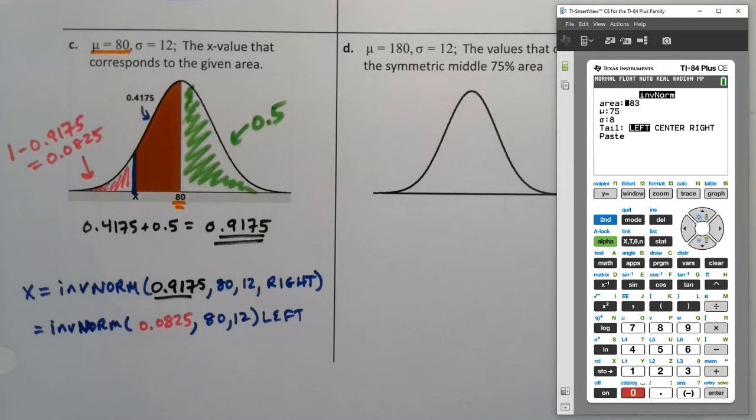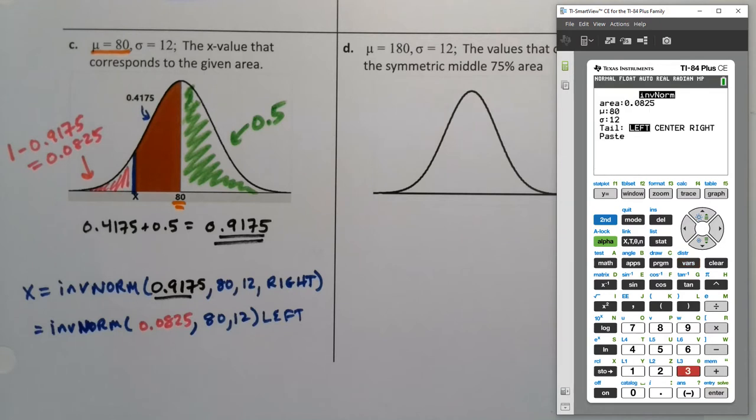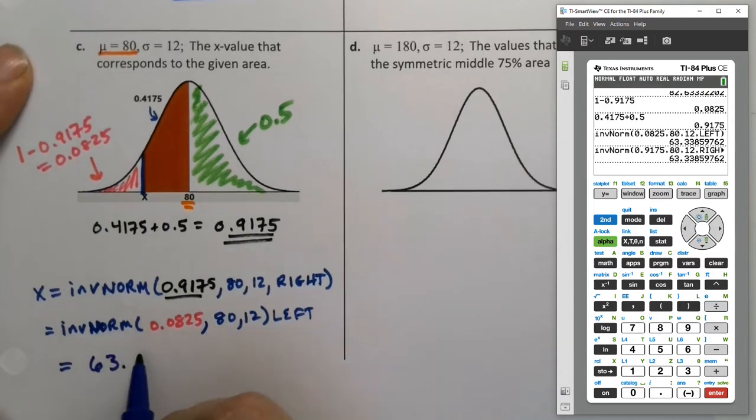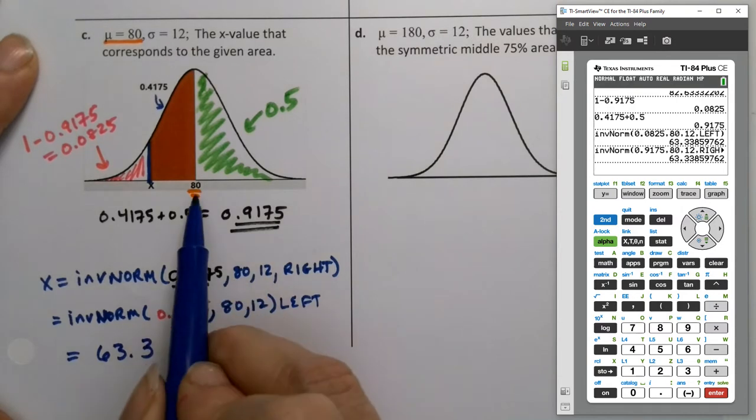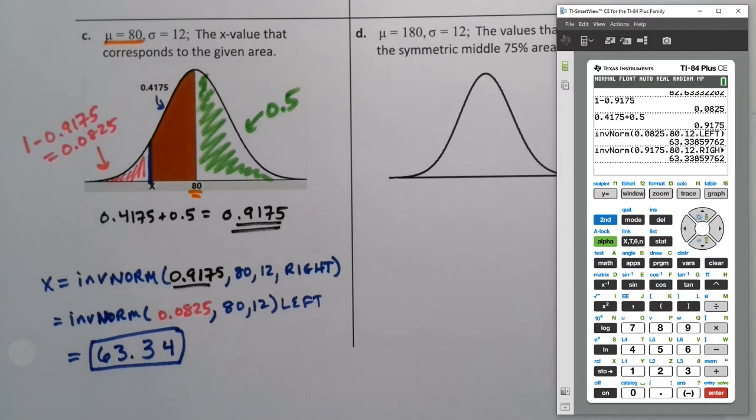All right. So inverse norm. Let's see what we've got here. 0.0825. I say 80 and 12. Make sure you put the right numbers in there. A lot of people will know what they're doing, and then they forget to put in the correct mean and standard deviation, and then it doesn't work out for them. All right. So I'm just going to prove to you 0.9175. And if I go over here to the right and paste, both of them are the same. And notice, I mean, it should make logical sense to you. The answer we're getting is below the mean, which it should be, right? So that's a hint, right, that we're doing this right.